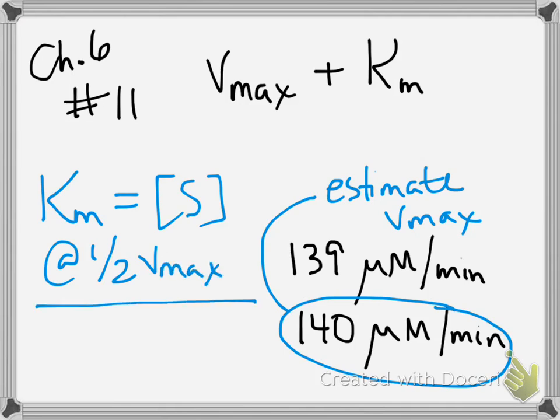So you go back to your table, and since you've identified 140 as your Vmax, you look at what the substrate concentration is when your velocity is half of Vmax, which is 70 micromole per minute.